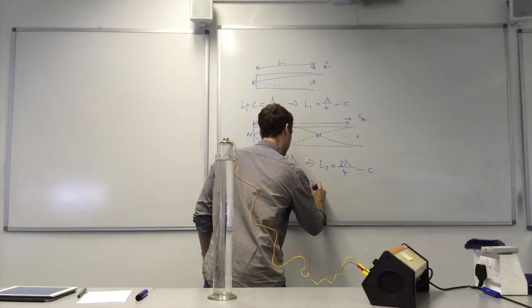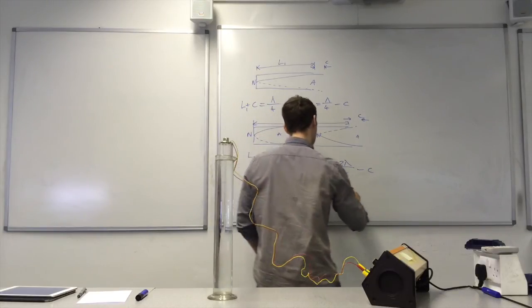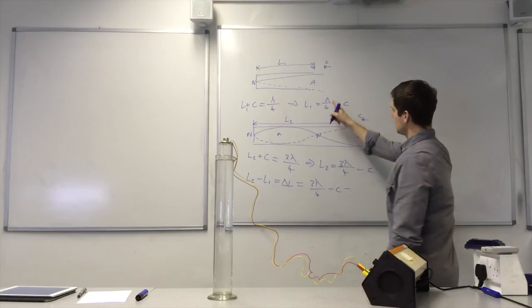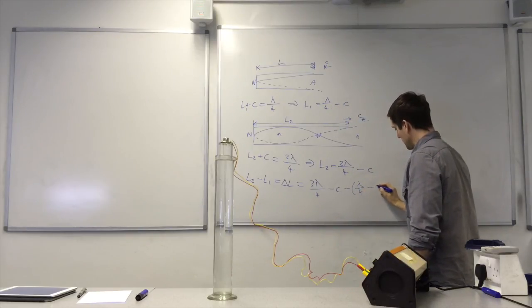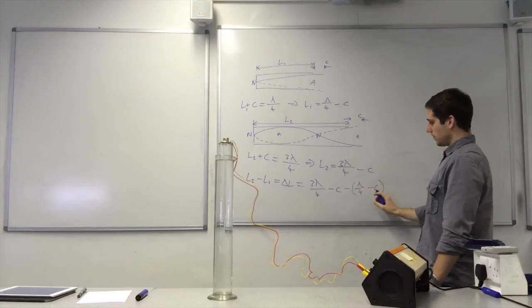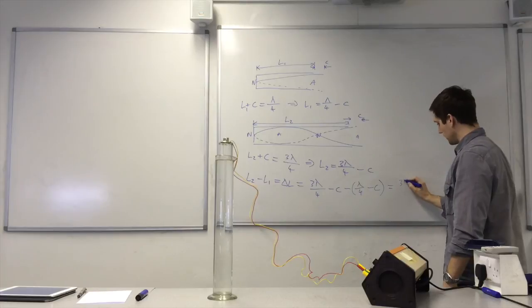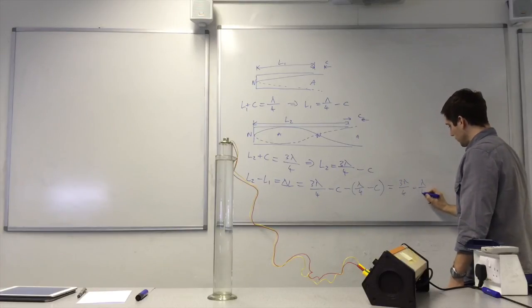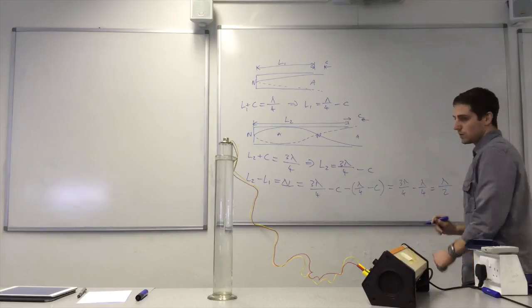That's equal to 3 lambda over 4 minus C minus all of this. So they'll get rid of my C terms there. They're going to cancel out. So I get 3 lambda over 4 minus lambda over 4, which is lambda over 2.